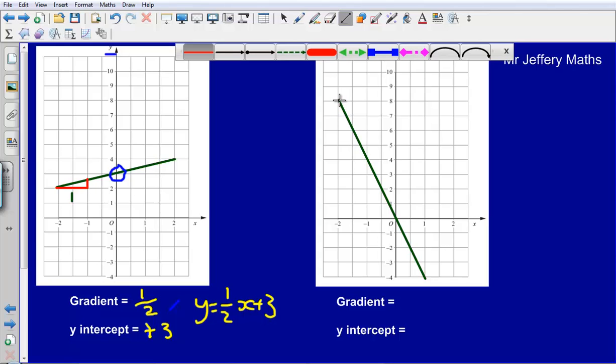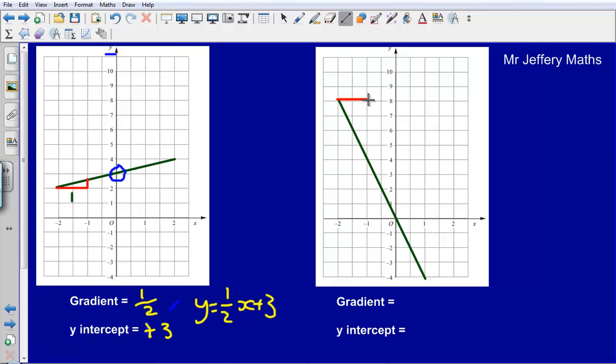So if we are going from, it doesn't matter where we start, but let's start at minus two. So if we are moving along by one on the x-axis, so going from minus two up to minus one, we are moving down on our y-axis by four. So let's label this, we've moved along on our x-axis, we've moved along by one.